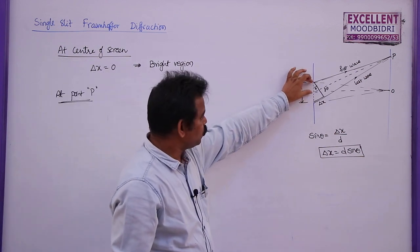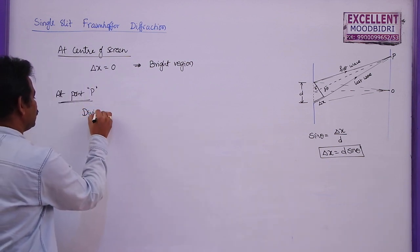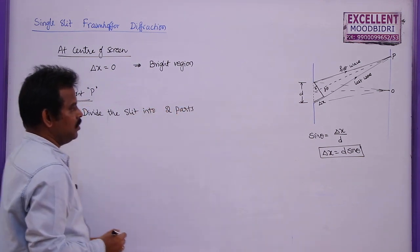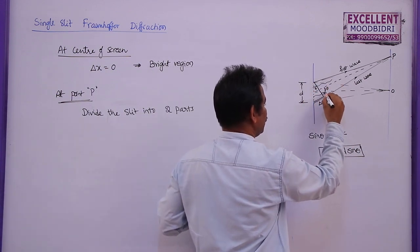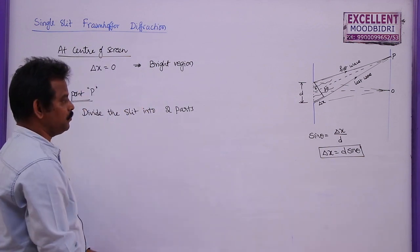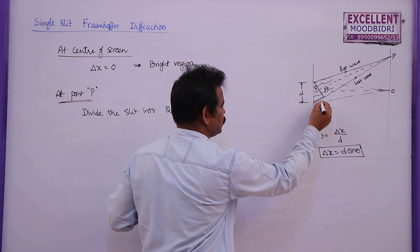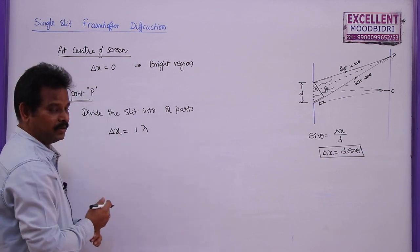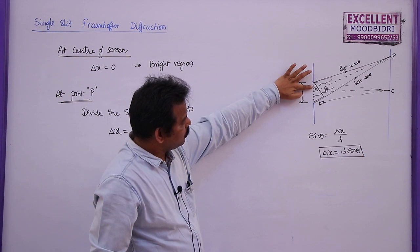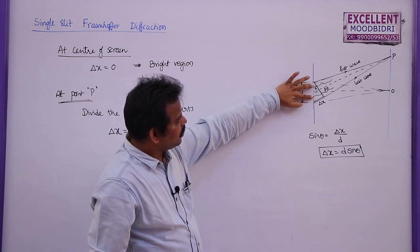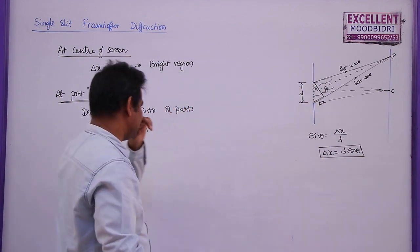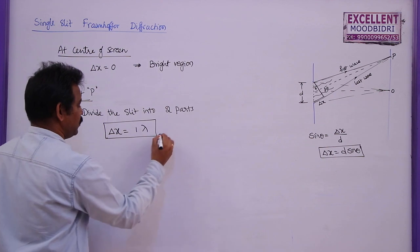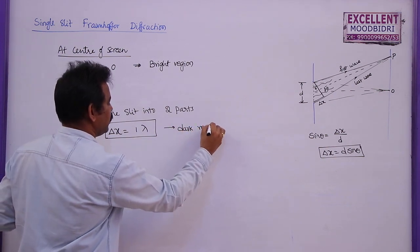Now if you divide the slit into two parts, then for every wave emanating from the first part, there will be a corresponding wave with a path difference of λ/2. So if the total path difference delta x = λ, for every wave in the first half there is a wave with a path difference of λ/2. These two undergo destructive interference and a dark fringe is formed. So when path difference equals one lambda, you get a dark region at point P.